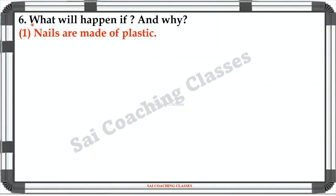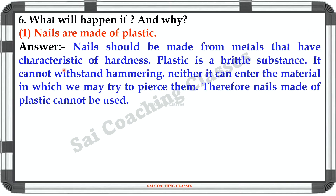D: What will happen if and why? Nails are made of plastic. Answer: Nails should be made from metals that have characteristics of hardness. Plastic is a brittle substance. It cannot withstand hammering. Neither can it enter the material in which we may try to pierce them. Therefore, nails made of plastic cannot be used.